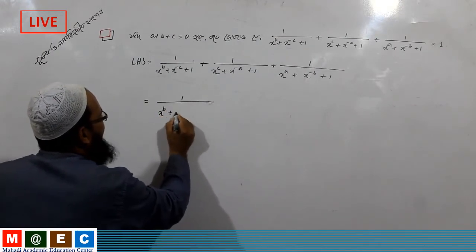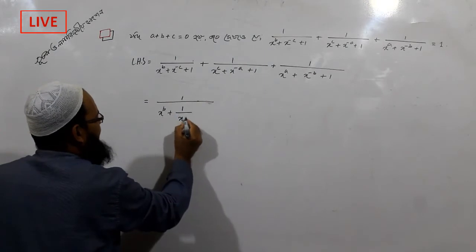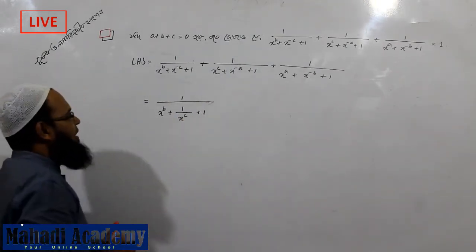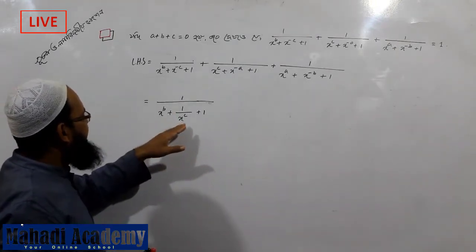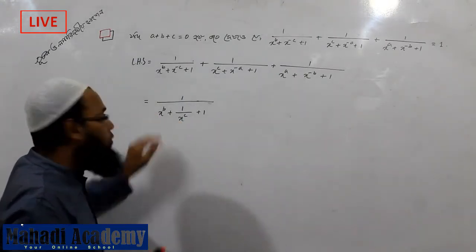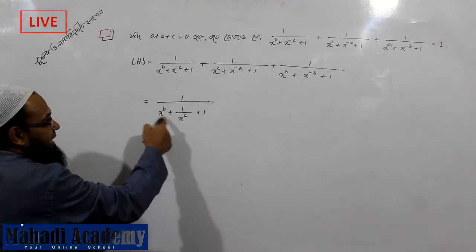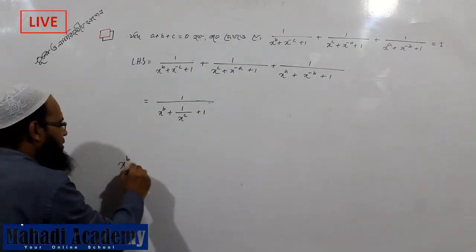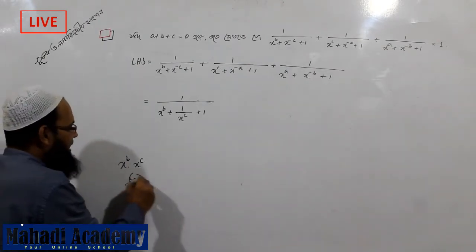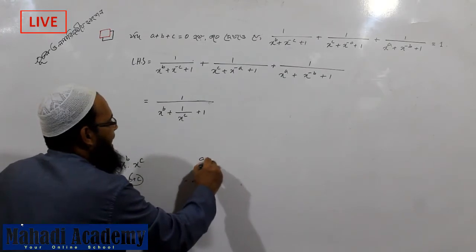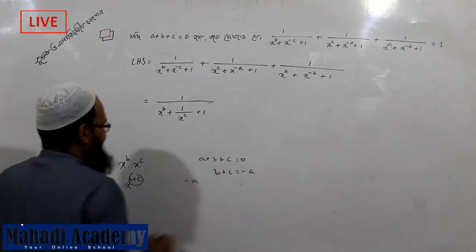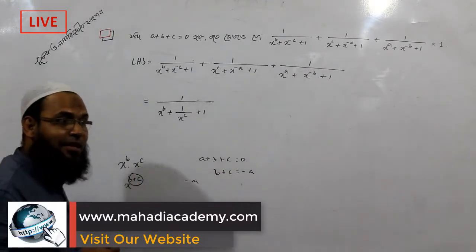plus x to the power minus b plus 1. I am going to write 1 by x to the power b plus x to the power 0 by x to the power b and the power c plus x to the power c. B plus C, x to the power C, B plus C, A plus B plus C, B plus C, x to the power minus A.